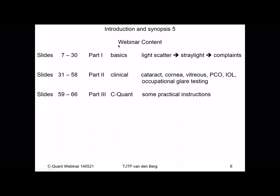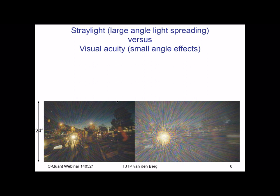This is the content of the webinar. I will start with some basics explaining the process that leads from light scatter to stray light to complaints, and the importance of stray light for visual function. In Part 2, I will summarize a great many studies on stray light in cataract, cornea, vitreous, PCO, IOL, and occupational glare testing. And at the end, I will do a rather simple instructional phase on the SeQuant.